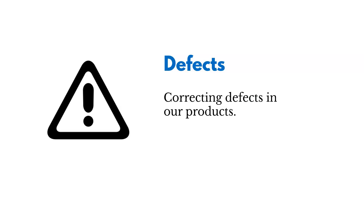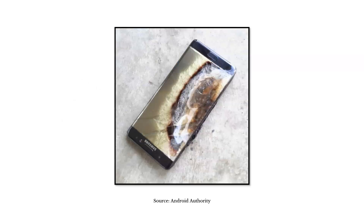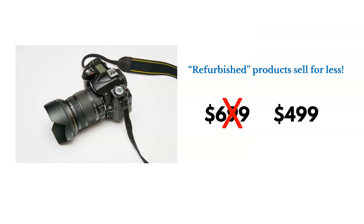The final source of waste is defects — issues that we've got to correct in our products. An example of this was the Samsung Galaxy Note 7, which had a battery issue that caused some phones to catch fire. One of the problems with defects is that if we've got to repair, rework, or refurbish a product, we often can't sell it for full price — we've got to reduce it and sell it at a discount.